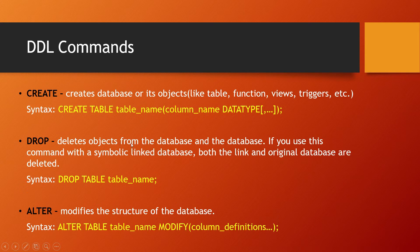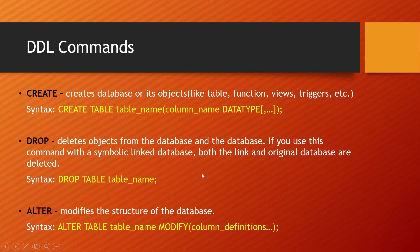DROP — it deletes objects from the database and the database itself. If you use this command with a symbolically linked database, both the link and the original database are deleted. The syntax is: DROP TABLE table_name.